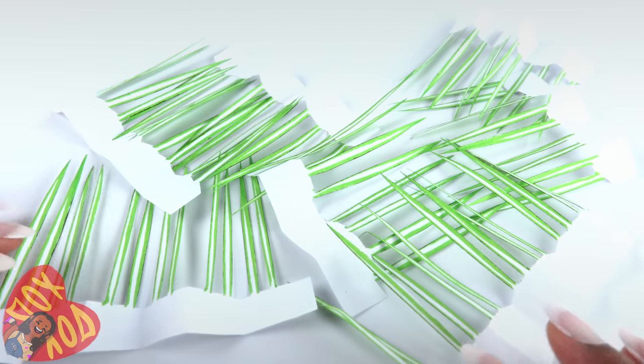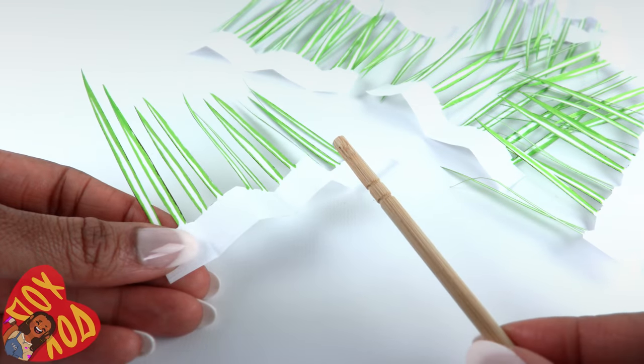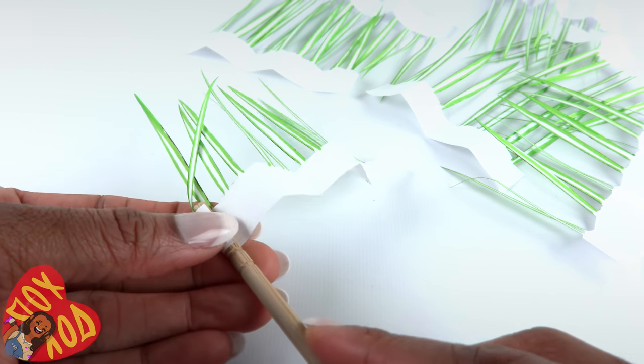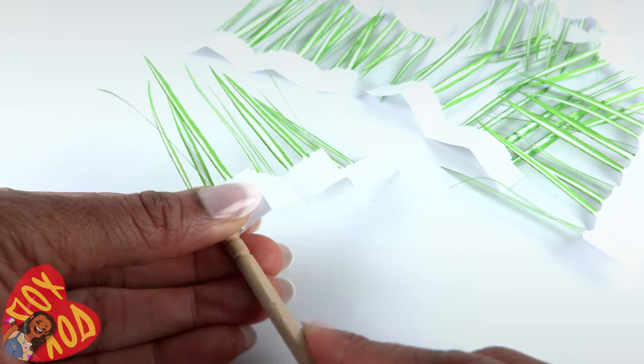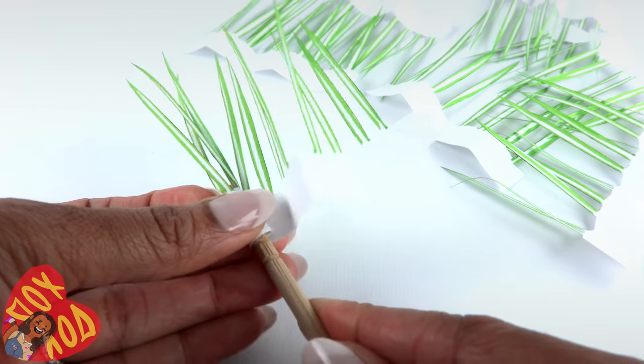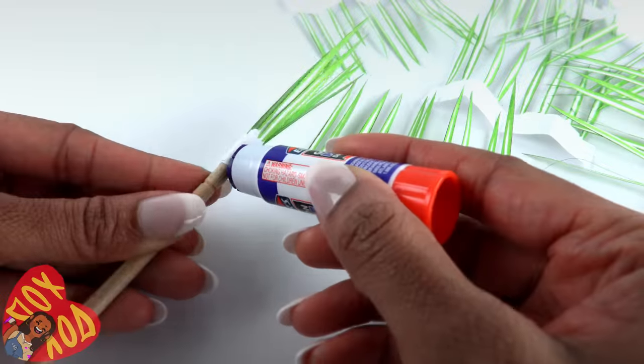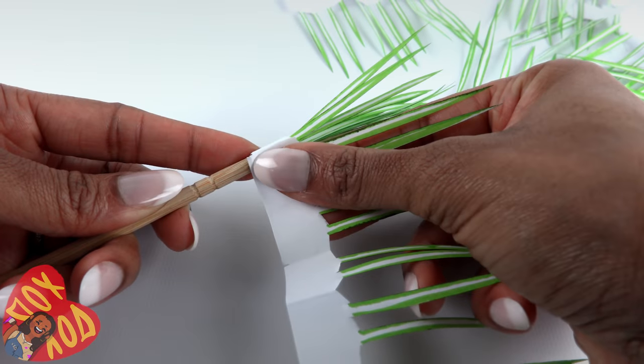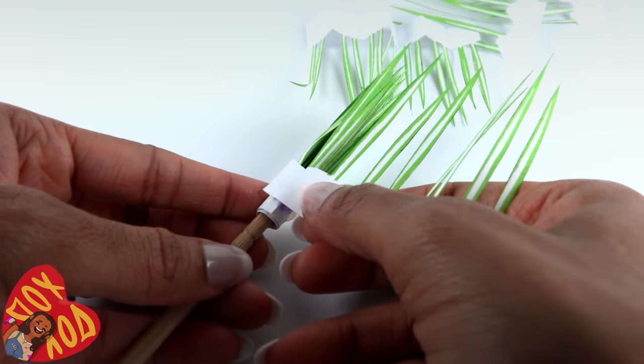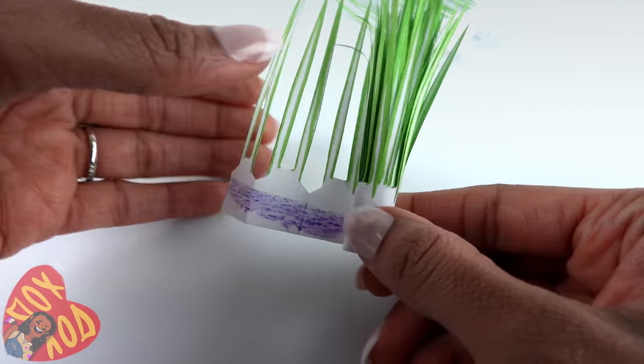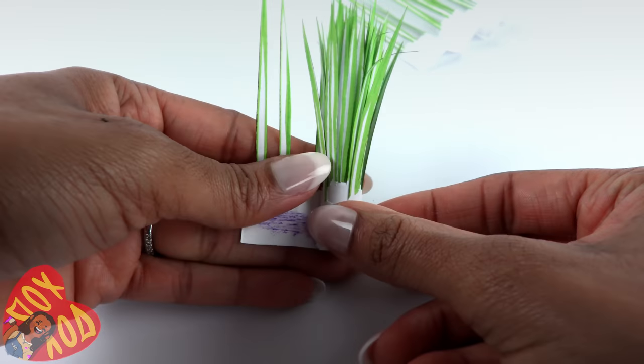Now that we have all of our leaves, take the end of a chopstick or a wooden dowel, place it on the white part that's at the bottom of the leaves, and just roll it. Use a glue stick to secure the end, and add another strip of paper, and another, and another, and another. I'm going to add one more just to be safe.